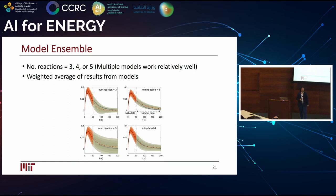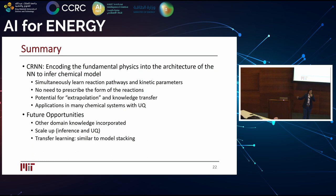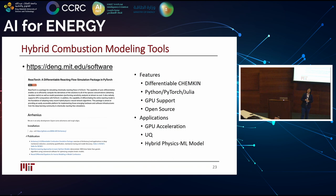In summary, we developed the Chemical Reaction Neural Network framework, incorporating physics into the architecture so that we can simultaneously learn chemical pathways, the number of species involved, and kinetic parameters — without providing a template for fitting. We can further incorporate new physics and learn for other scenarios. Our hope is that, similar to physical chemical models, if we have a new system we can stack neurons together to incorporate new species and reactions. The tools we developed over the past two years are on GitHub, accessible from our group website.